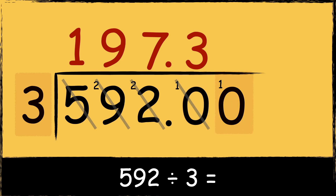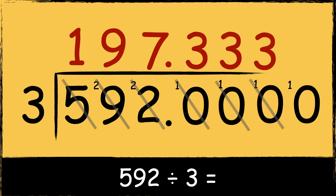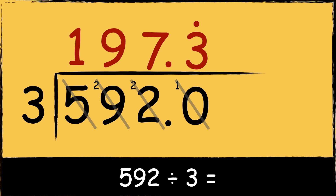Three goes into ten three times with one left over. As we still have one left over, we need to place another zero. Three goes into ten three times with one left over again. Notice how each time we bring down another zero, three fits into ten three times with a remainder of one — this process will just keep repeating. In maths we call this a recurring decimal. We show a recurring decimal with a dot or a bar over the repeating digits, indicating that the decimal 3 will repeat forever. So the answer is 197.3 recurring.